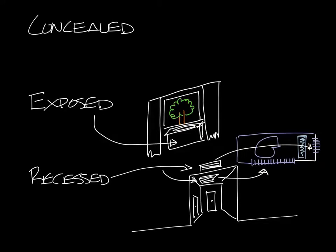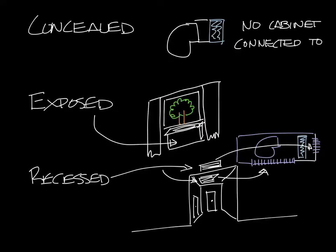So now a concealed fan coil is installed completely behind the wall or ceiling. So it's usually made up of just the blower and the water coil. There's usually not a cabinet in it because it's going behind the wall it doesn't have to look all pretty. And it'll be connected to a grill that is visible in the space but the rest of it is behind the wall or ceiling in your hotel room for instance.